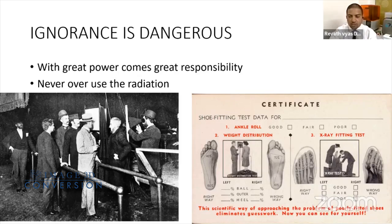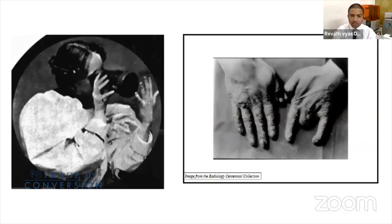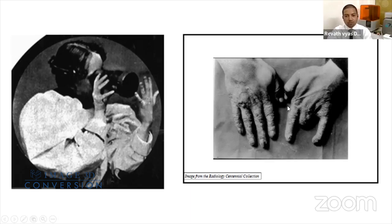If you need endo resolution, ask for endo resolution of that particular tooth or quadrant. If you want a full arch only for an overview, ask for a low-dose CBCT. This is how you can avoid high-dose radiation. In the initial days, radiologists used to check their fluoroscopes daily using their hands and developed carcinomas on their fingers — so it is always better to avoid excess radiation.